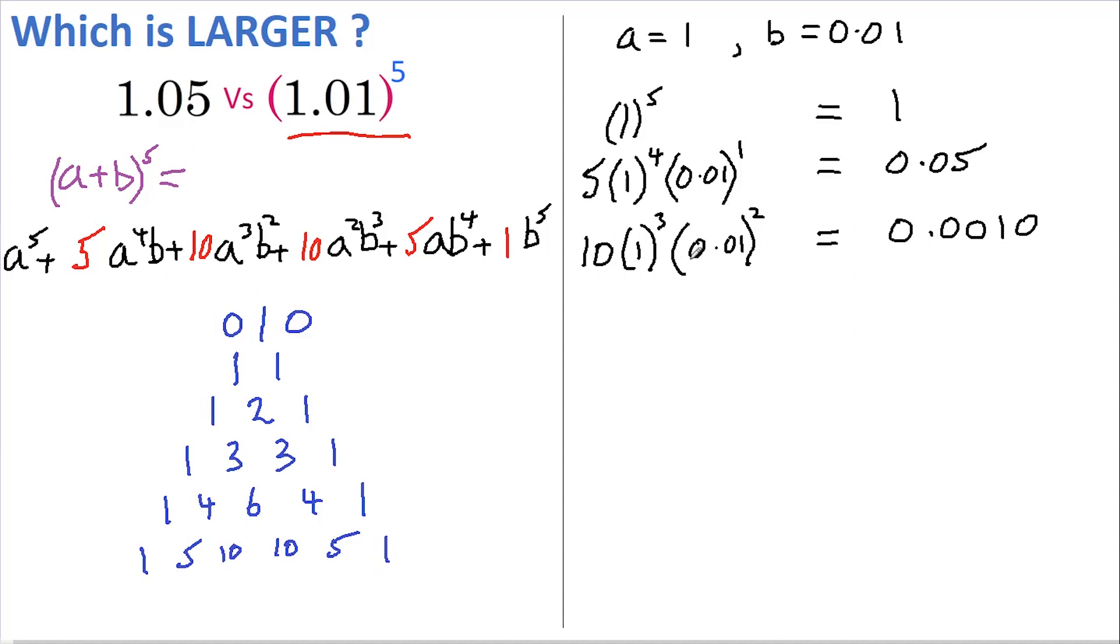Now can you see here that each coefficient is simply being multiplied by another power of 100? This means that the final result of this expansion is going to be 1.0510100501. So all our coefficients in the expansion appear in the answer in order.